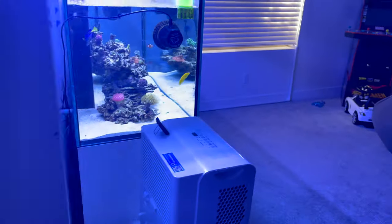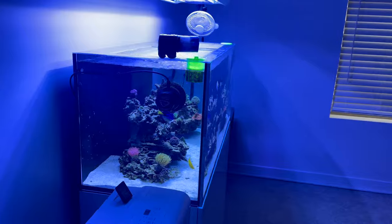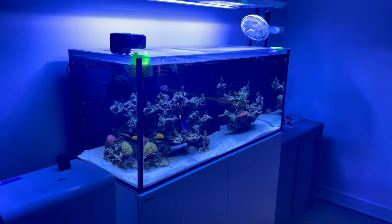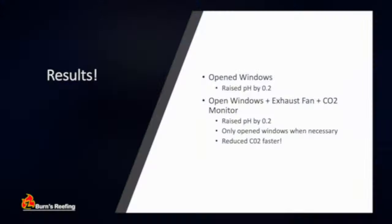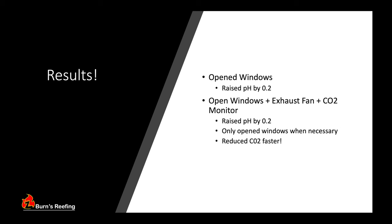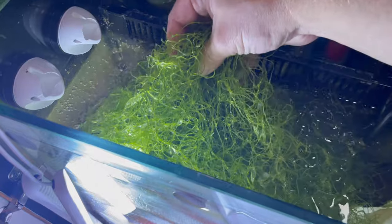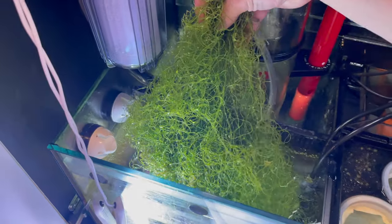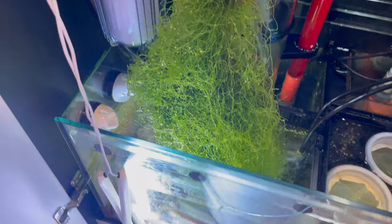So in summary, opening the windows raised my pH by 0.2, which is fantastic. And having the CO2 monitor and running the bathroom fan while opening windows made this whole process a little bit more efficient. So I wasn't just blindly leaving windows open at all times when I really didn't need to. Now I know I can't just open my windows in the dead of winter or summer, so I needed other solutions to help support my pH goals.